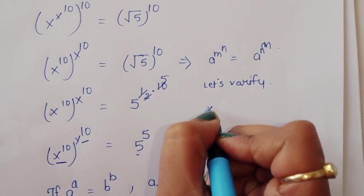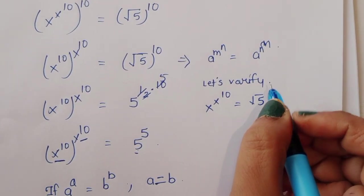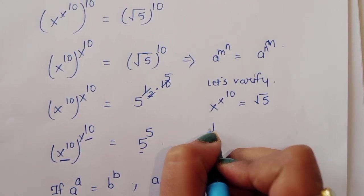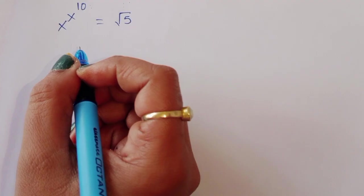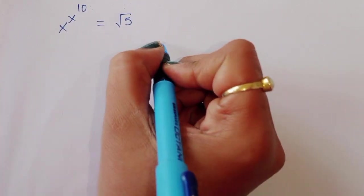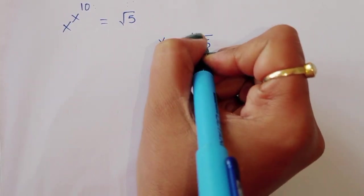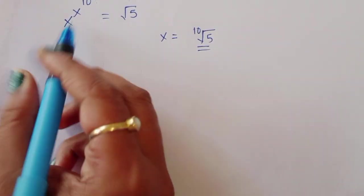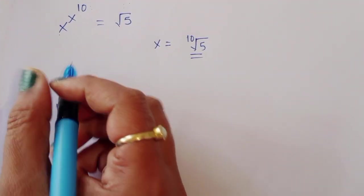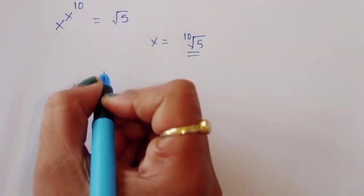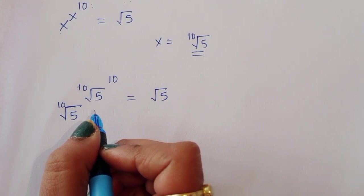The question is given: x power (x power 10) is equal to the square root of 5. We know the value of x, which is the 10th root of 5. Let's substitute: x equals 10th root of 5, so x power (x power 10) — substituting in — raised to the power 10 is equal to the square root of 5.